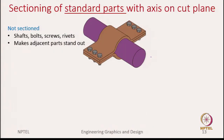There are some instances when, even though your section plane cuts an object or part, you need not do the hatching. What are those special cases? We do that for standard parts, especially when their axis is on the cutting plane. This is very important: the axis of the part should be in the cutting plane. The standard parts we are talking about include shafts, bolts, screws, and rivets.